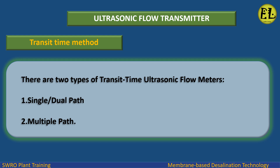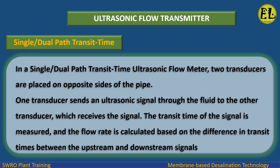There are two types of transit time ultrasonic flow meters: one, single/dual path, and two, multiple path. In a single/dual path transit time ultrasonic flow meter, two transducers are placed on opposite sides of the pipe. One transducer sends an ultrasonic signal through the fluid to the other transducer, which receives the signal. The transit time of the signal is measured, and the flow rate is calculated based on the difference in transit times between the upstream and downstream signals.